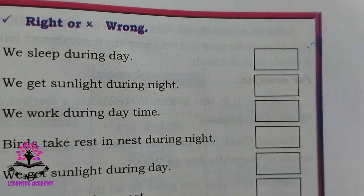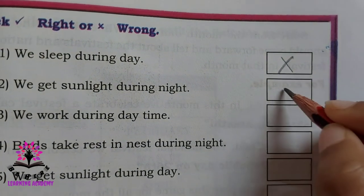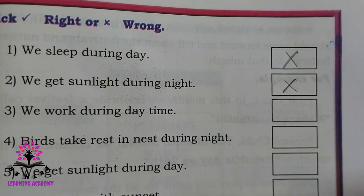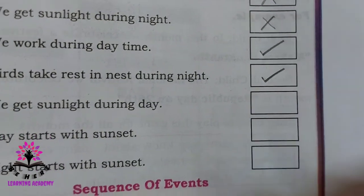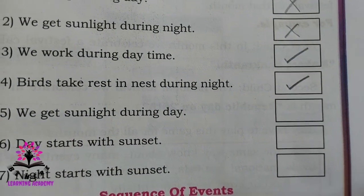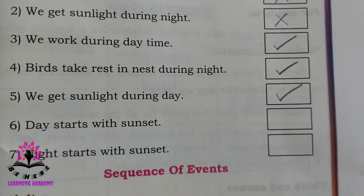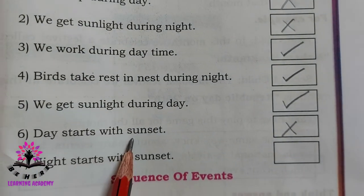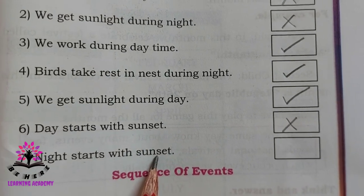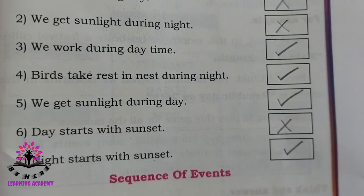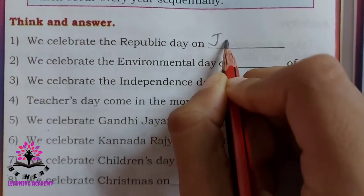True or false. We sleep during the day — False. We get sunlight during the night — False. We work during daytime — True. Birds take rest in their nests during the night — True. We get sunlight during the day — True. Day starts with sunset — False, because a day starts with sunrise. Night starts with sunset — True.